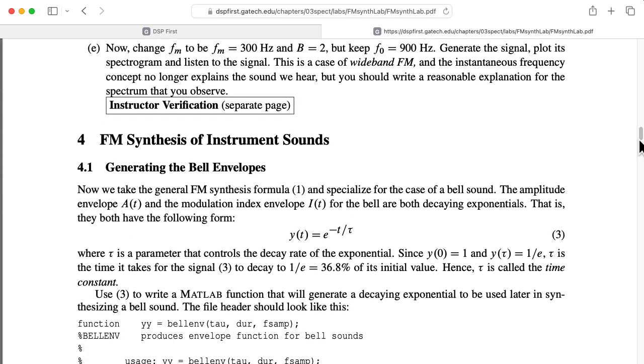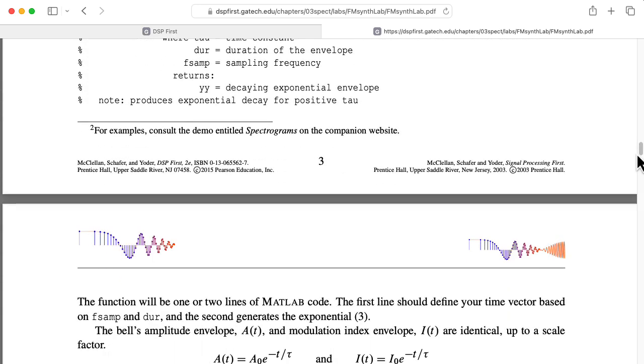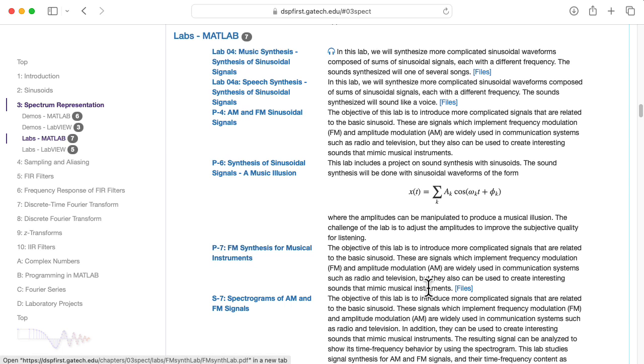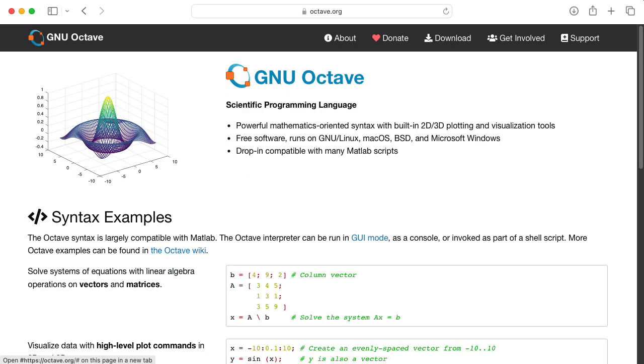All of the instructions you need are given here. Notice that in addition to the PDF, you'll want to click on the files link here to get the fmsynthlab.zip file. And you don't need a MATLAB license. You should be able to do the lab using the free software Octave.